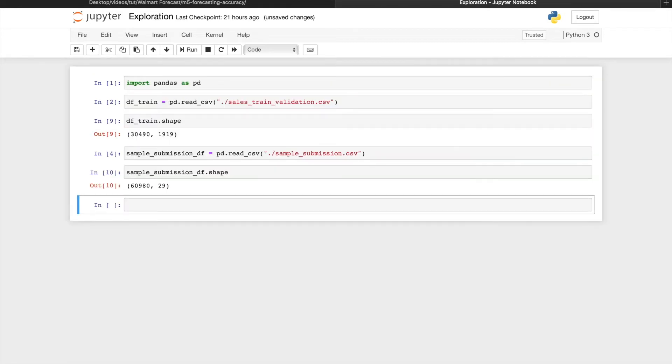Notice that this file is exactly twice as long as the salestrainvalidation.csv, and that is because in the file we submit, we want to first make predictions for each of these 30,490 series for the next 28 days.